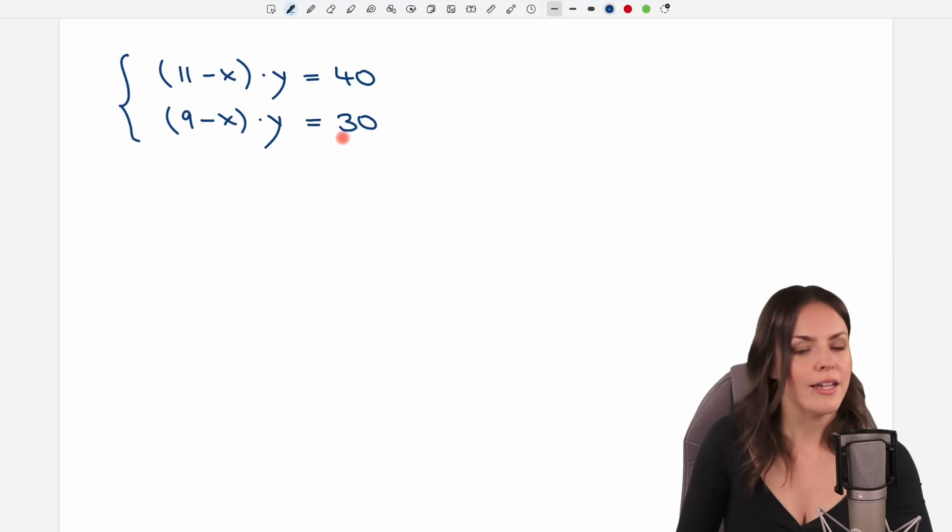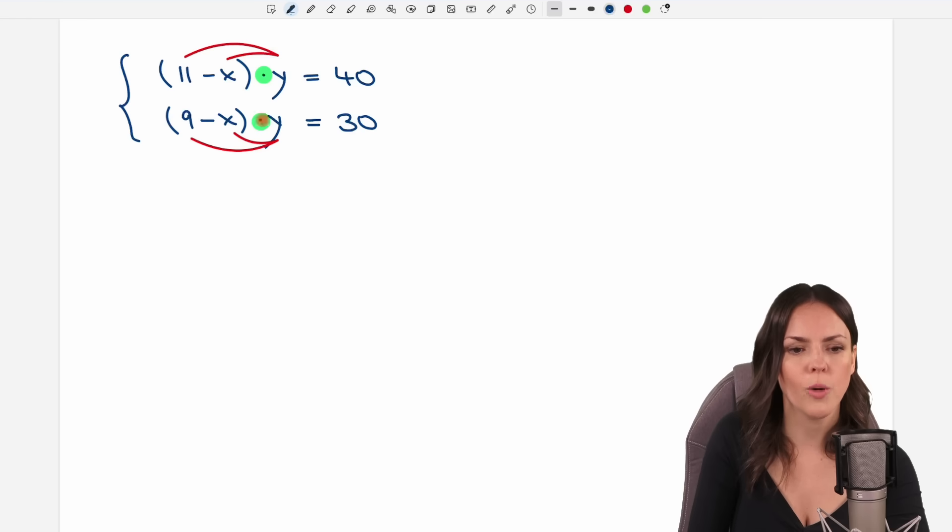So let's try and solve this system of equations. There are multiple ways how to do it. Maybe we first get rid of these parentheses by multiplying them by y here and there so that we multiply each element in here by y and the same here as well. So in the first equation we have 11 times y, so 11y minus xy equals 40. And in the second equation 9 times y minus xy again and this time this equals 30.